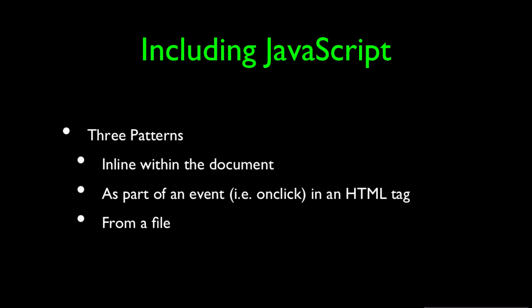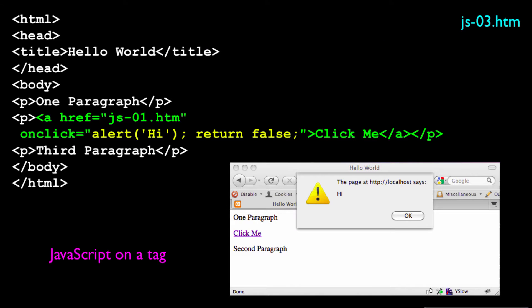There are three ways that you can put JavaScript into a document. One is inline within the document using the script tag. You can also put it on things like onclick methods, on hrefs, etc. Or you can include a whole file. We'll see all of these examples.